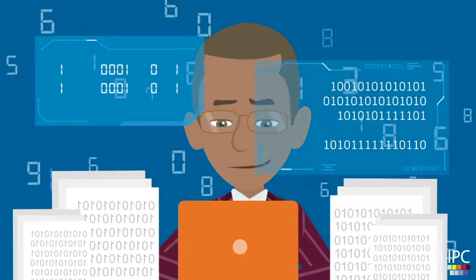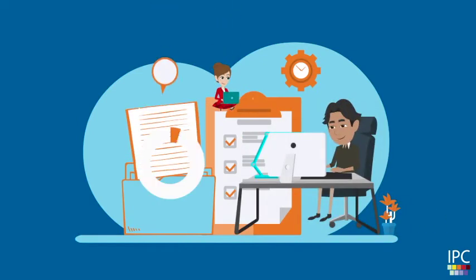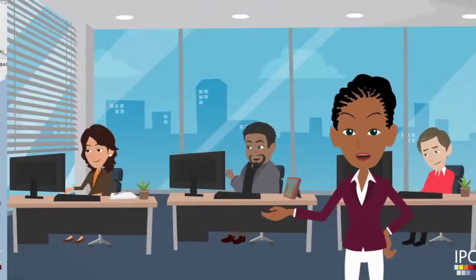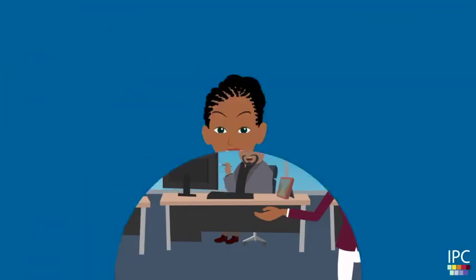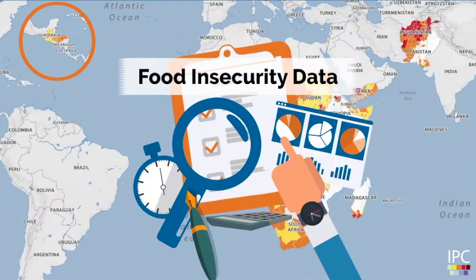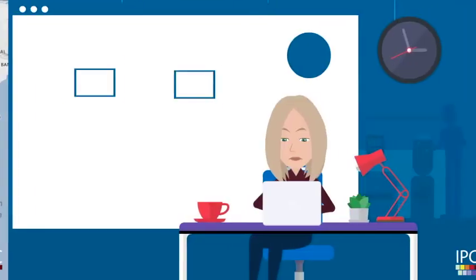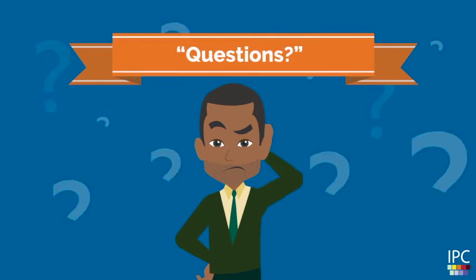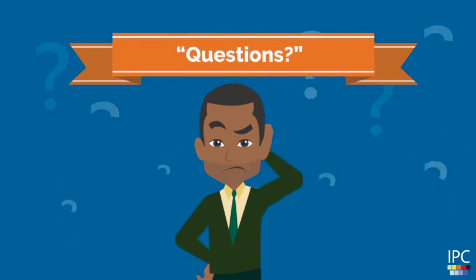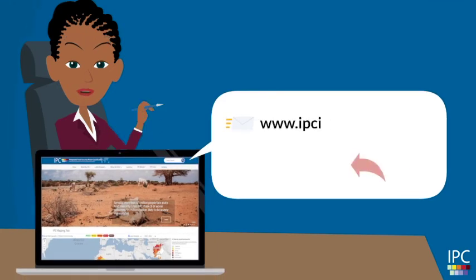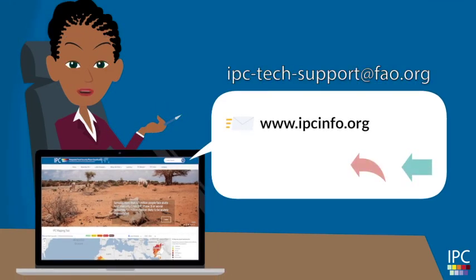Developers will receive technical documentation, source codes, and standard operating procedures to test and install the API. After successful activation, partners and decision makers will have real-time access to acute food insecurity data from IPC analysis to support response decisions in more than 30 different countries facing food crisis. If you have any questions about how to use and access the API, please do not hesitate to email us at IPC-TechSupport at FAO.org.